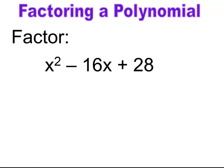Pause and try. Start with the rule: c is positive and b is minus, so both signs are the same — (x − )(x − ). Find factors of 28 that add up to 16, and you get 2 and 14. You could also write (x − 14)(x − 2).